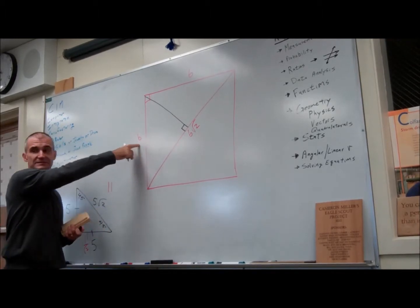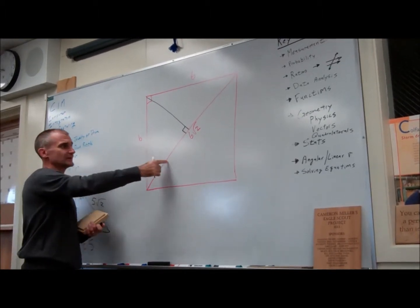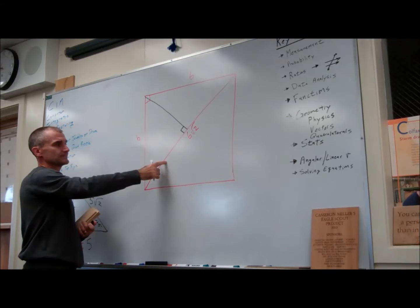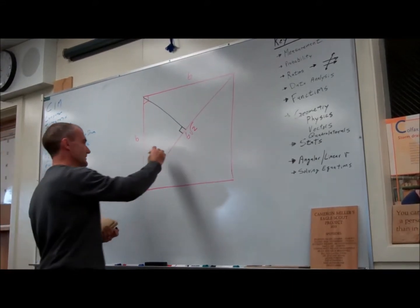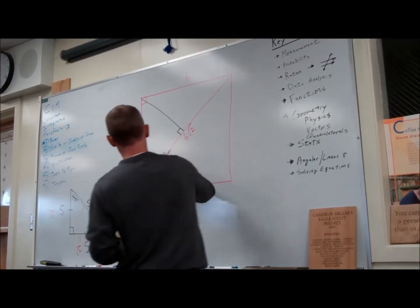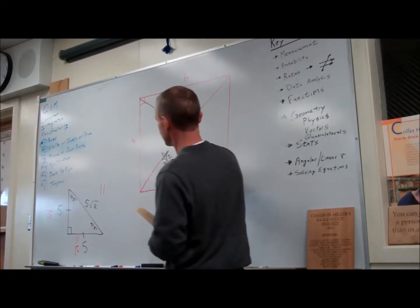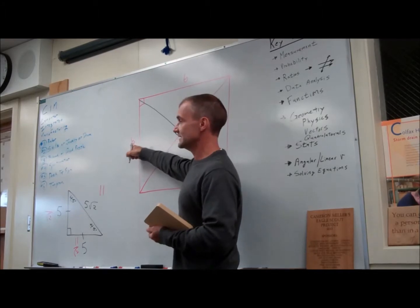If the hypotenuse is six, what's this leg right here? Six divided by root two. Six divided by root two, exactly. Six divided by root two is a leg times root two is six.